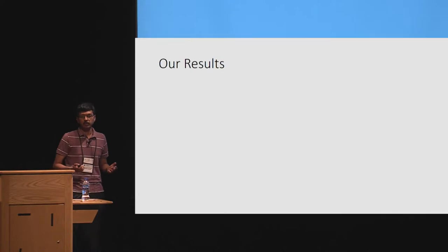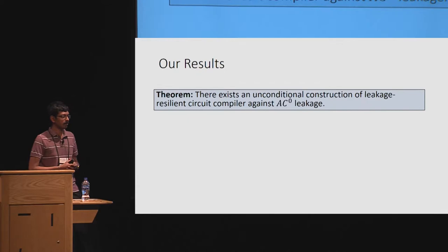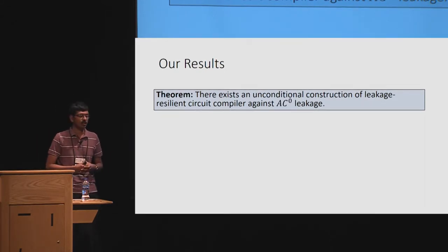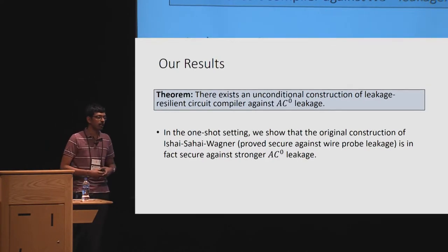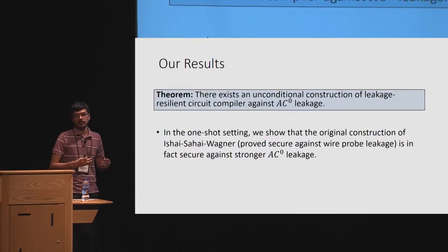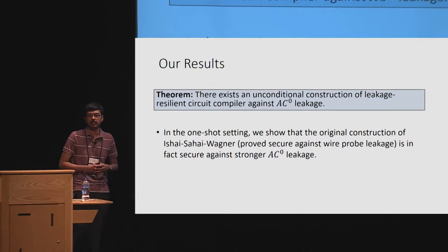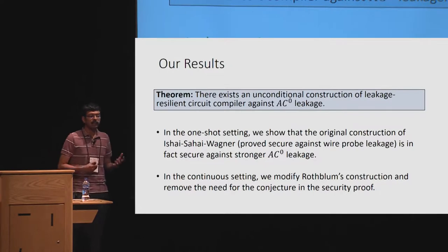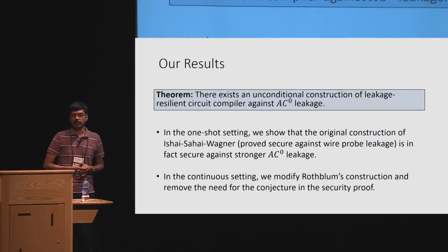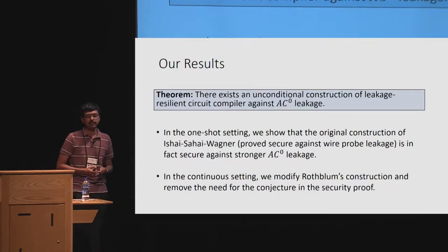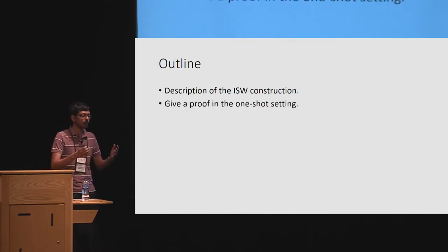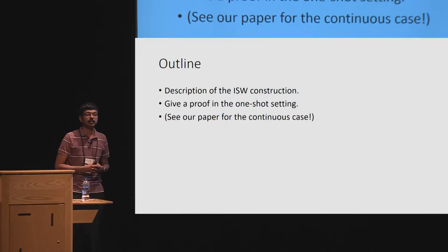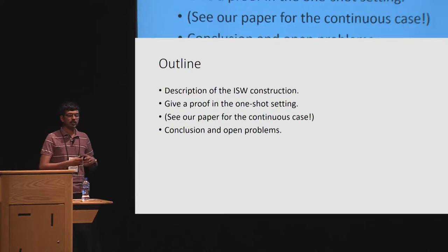In this work, we resolve this question positively by showing a construction of a leakage-resilient circuit compiler with unconditional security against AC0 leakages. In the one-shot setting, we show that the original construction of Ishai, Sahai, and Wagner — which was only proved secure against the weaker wire probe leakage model — is in fact secure against the stronger AC0 leakage. We show the exact same construction is secure against AC0 leakage. In the continuous setting, we modify the construction of Rothblum and remove the need for the unproven complexity-theoretic conjecture from the security analysis. In the rest of the talk, I'll describe the ISW construction and give a high-level overview of the proof that it is secure against AC0 leakages in the one-shot setting, and conclude with open problems.